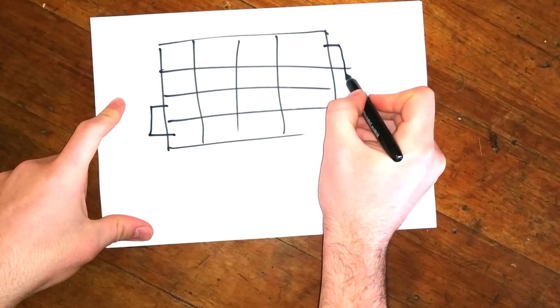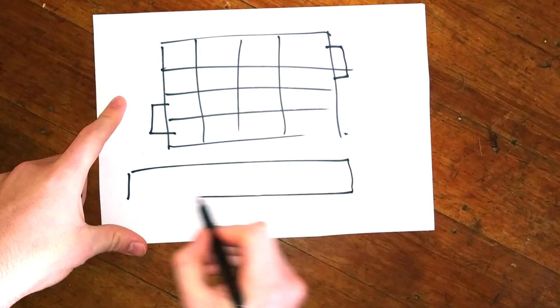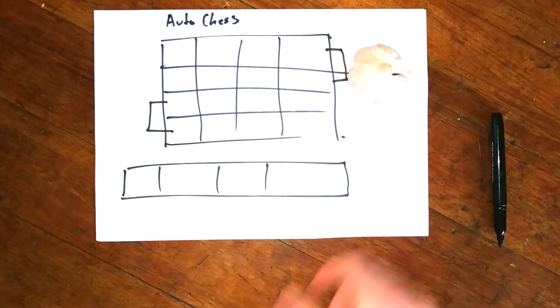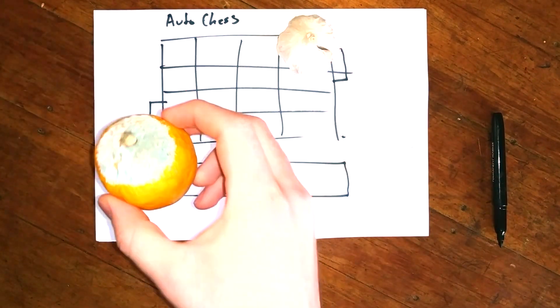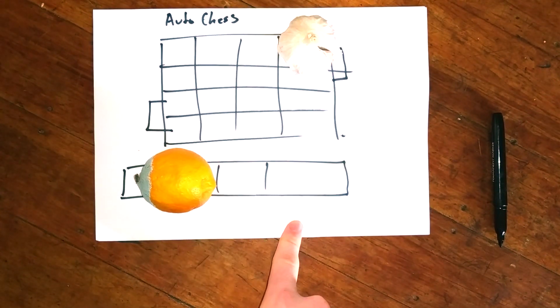And then you'll have a little toolbar at the bottom where you keep your pieces. Here's one kind of old garlic that's the other team. Here this moldy lemon is our units, right? So what you can do at the beginning of the round is you place your units here, then you start the round.